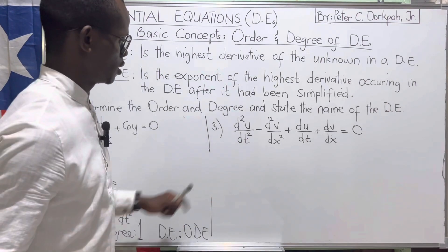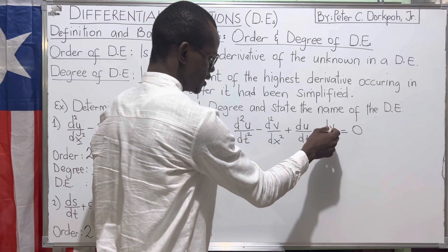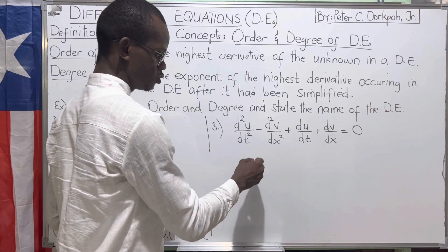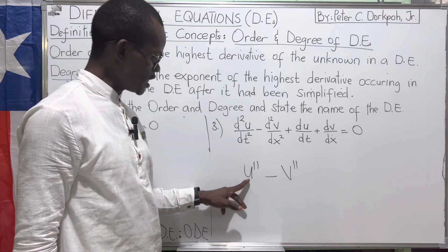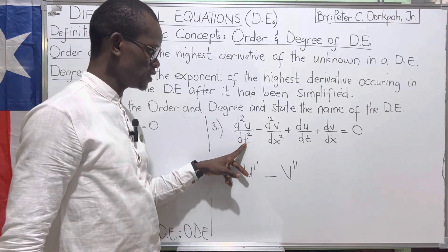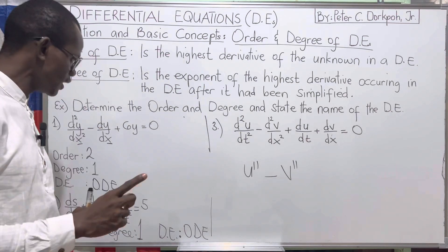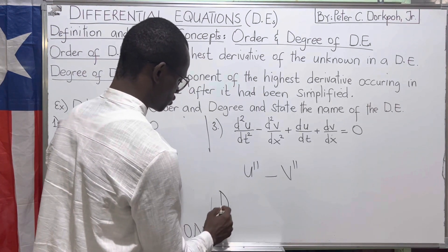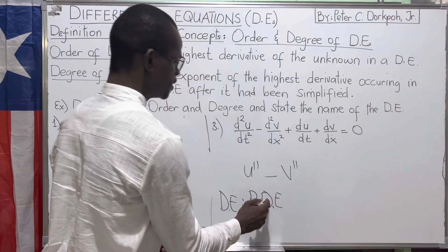Moving to the last question: in this case we have u and v. For the dependent variables, we have two: u double-prime and v double-prime. Within u double-prime, the independent variable is t, and within v, the independent variable is x. Since we have more than one independent variable, this is no longer an ordinary differential equation — it is a partial differential equation, PDE.